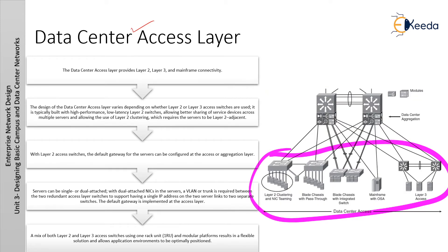The data center access layer is the bottommost layer. It provides Layer 2, Layer 3, and mainframe connectivity. The design of the data center access layer depends on whether Layer 2 or Layer 3 access switches are used. It is typically built with high-performance, low-latency Layer 2 switches, allowing better sharing of services across multiple servers and allowing the use of Layer 2 clustering, which requires the servers to be Layer 2 adjacent.